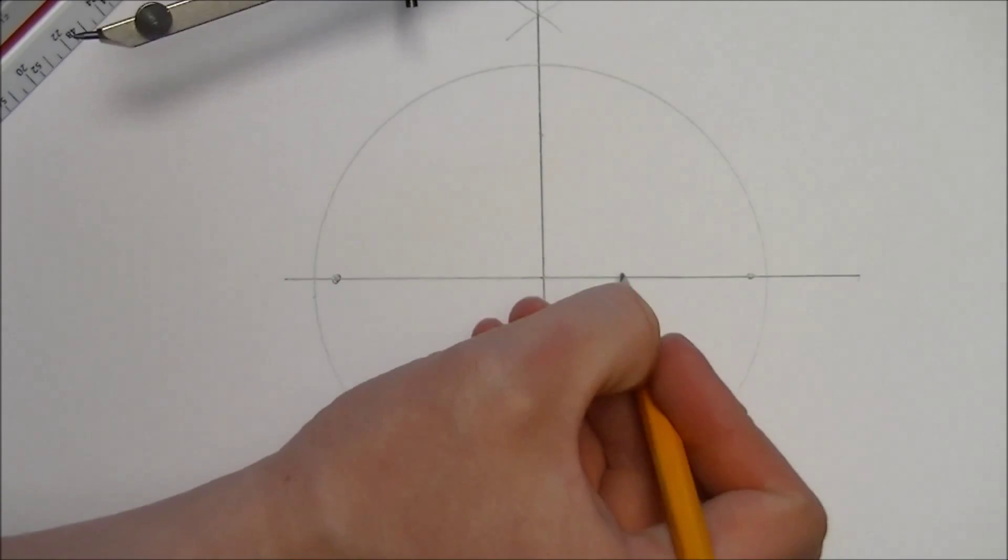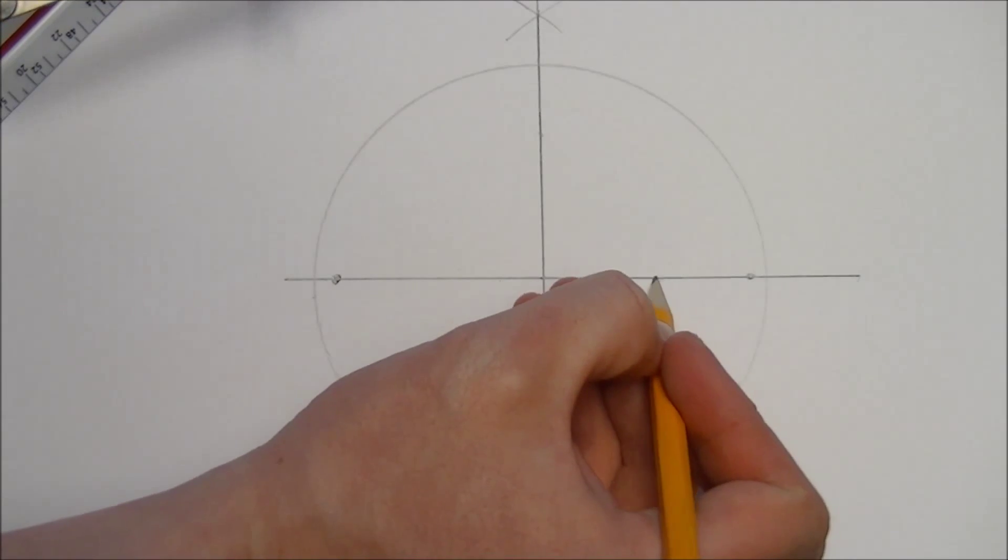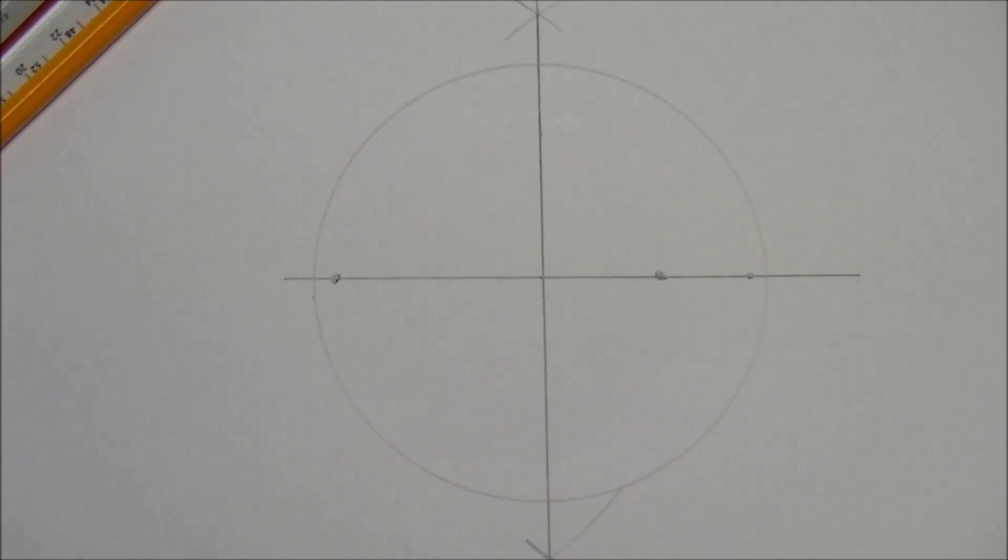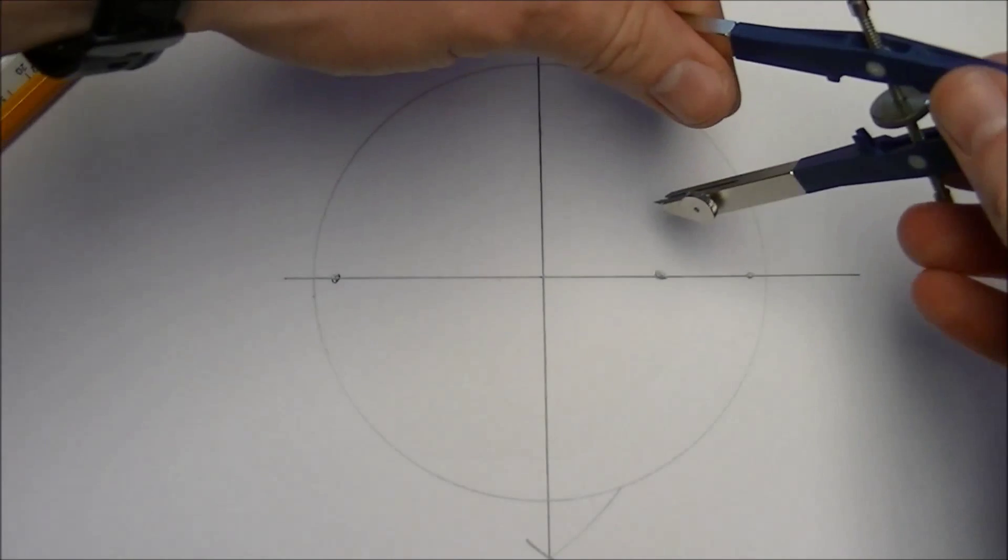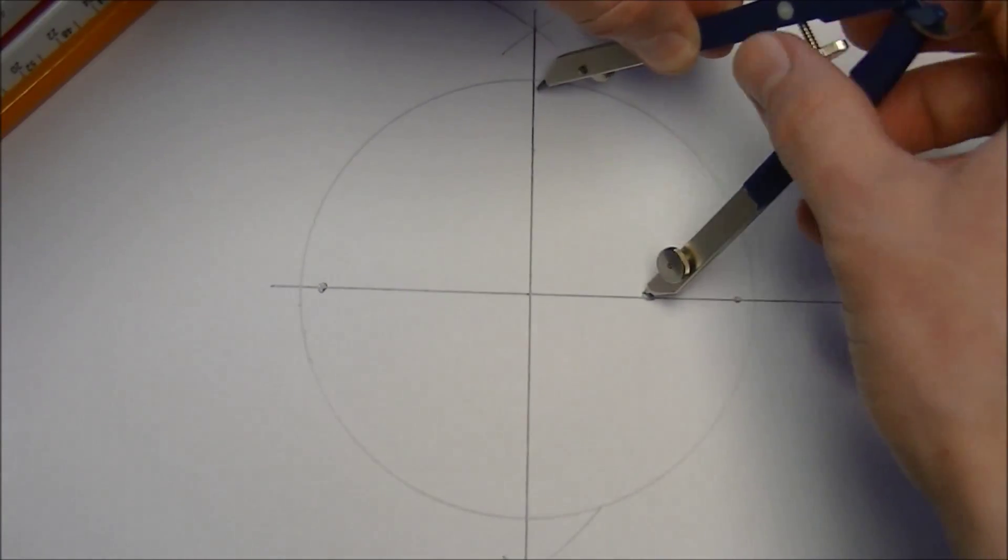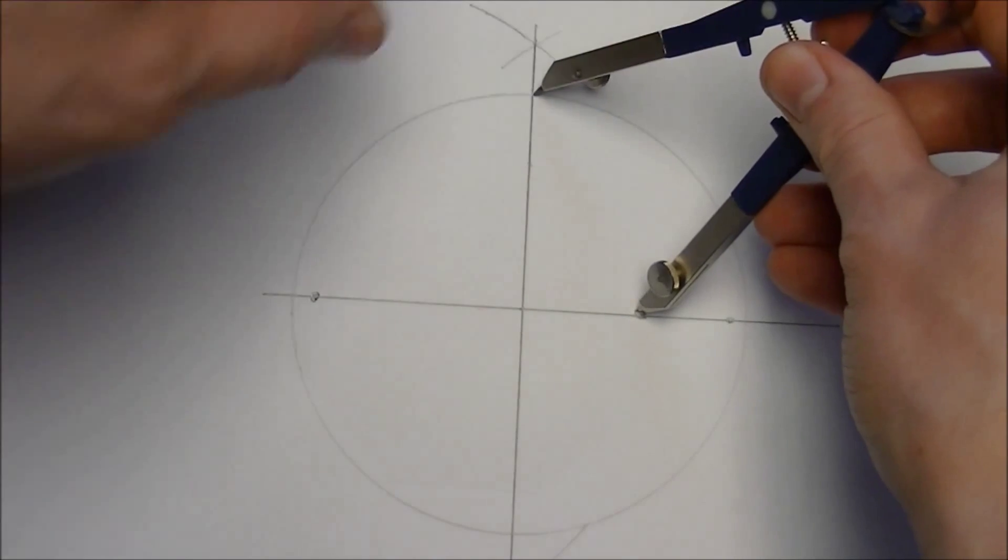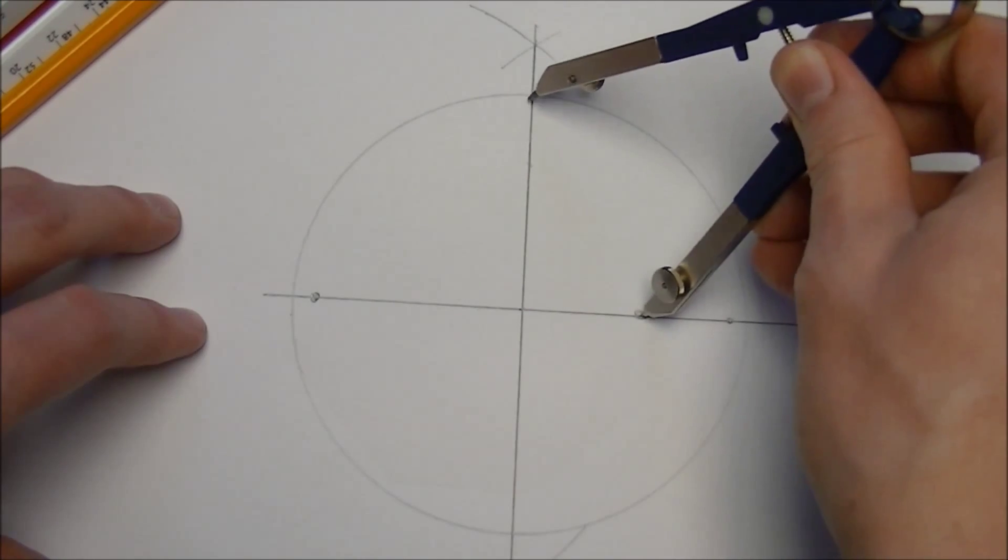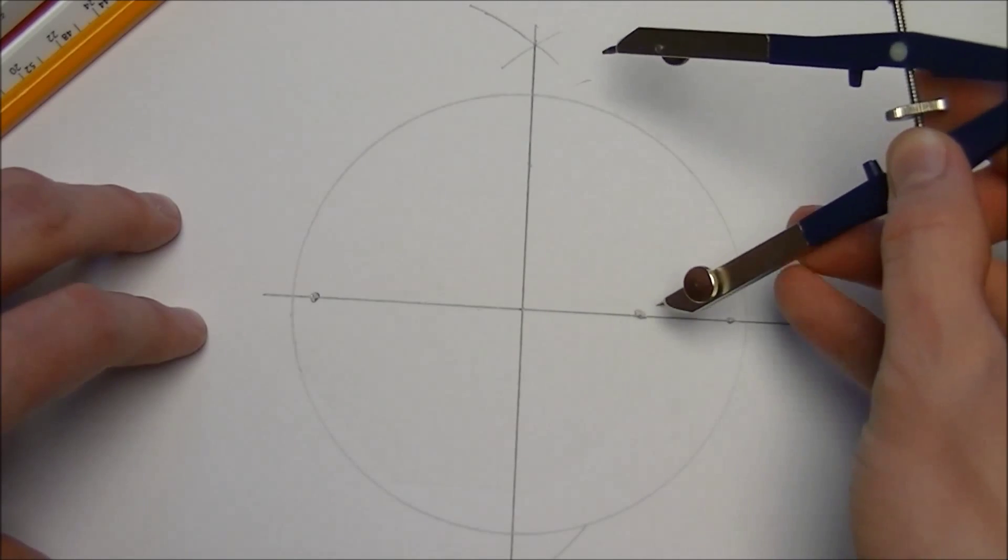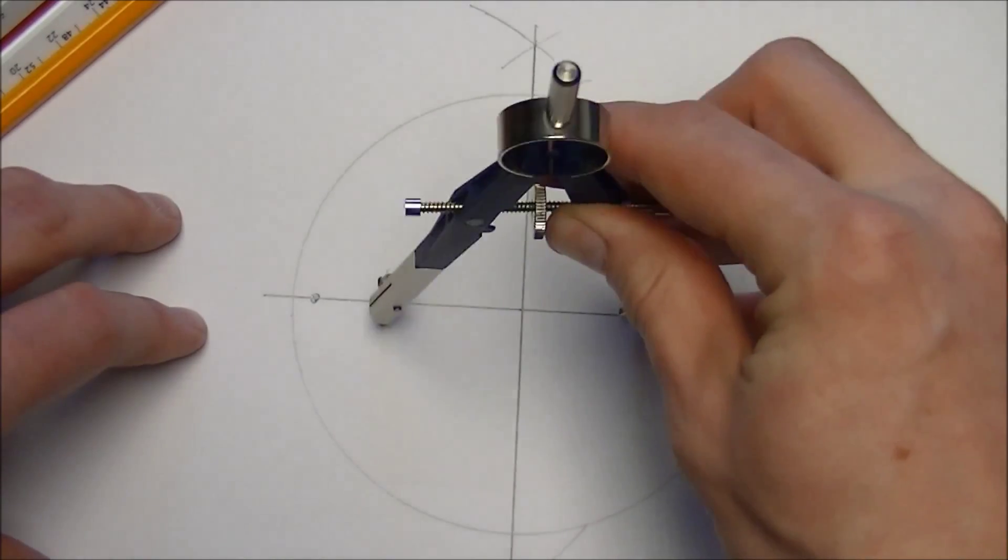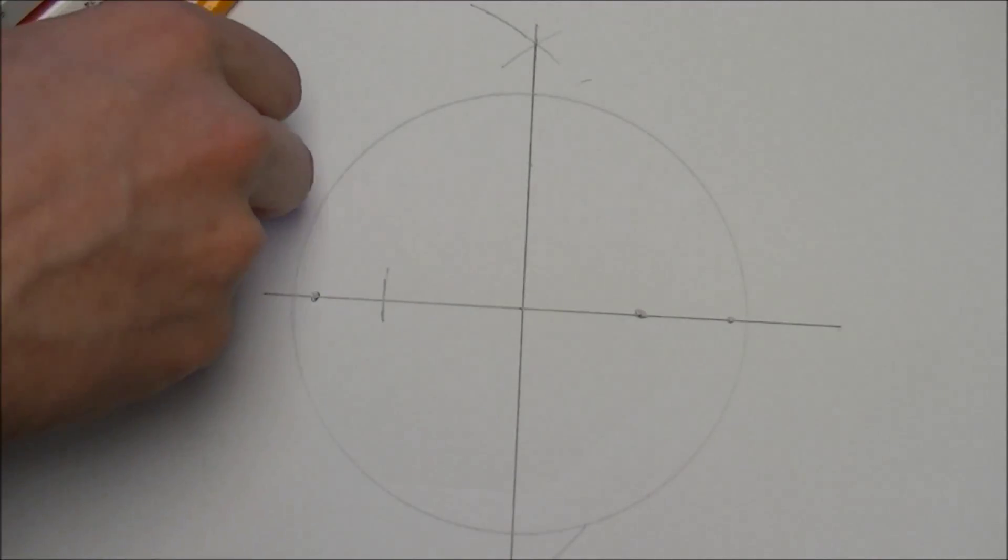You can draw a mark pretty much anywhere along the inside, along one of those lines. Then you're going to measure the distance from there to the upper point of that circle, from there to there. That's going to give us a second point right here.